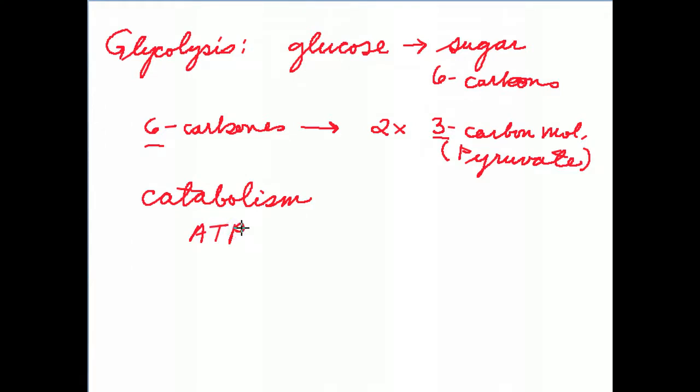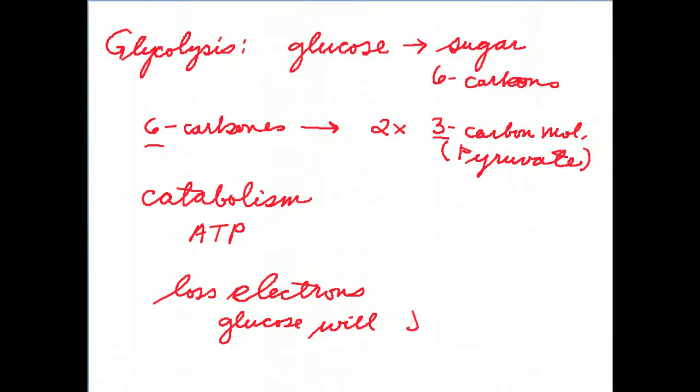Another thing that we're going to find out is that during this conversion of glucose into two molecules of pyruvic acid, we're going to lose electrons that originated in the molecule glucose. It's going to lose electrons. So we're going to say that glucose will be oxidized.